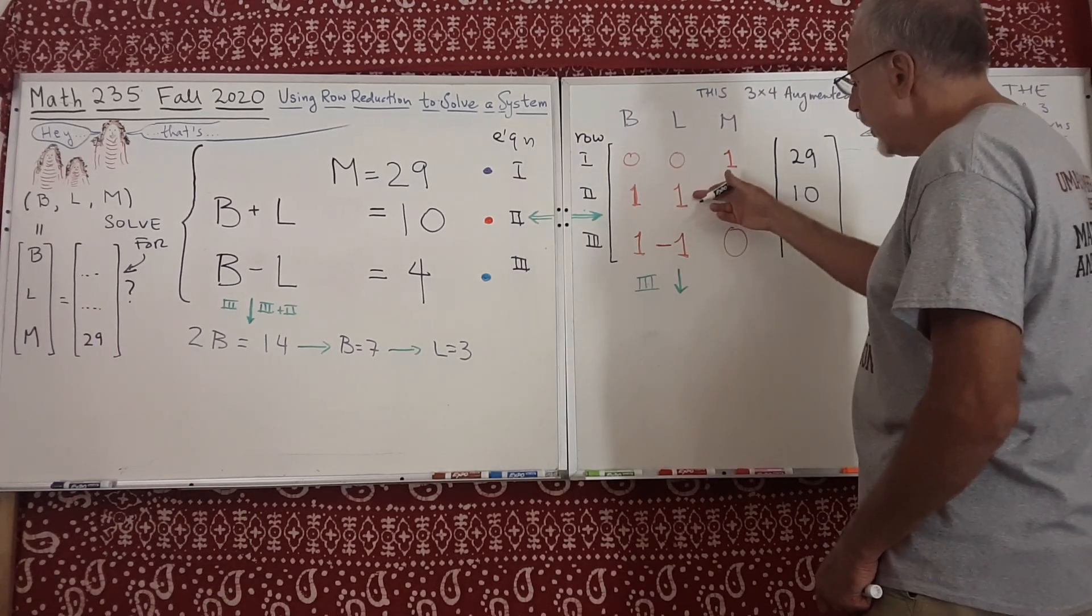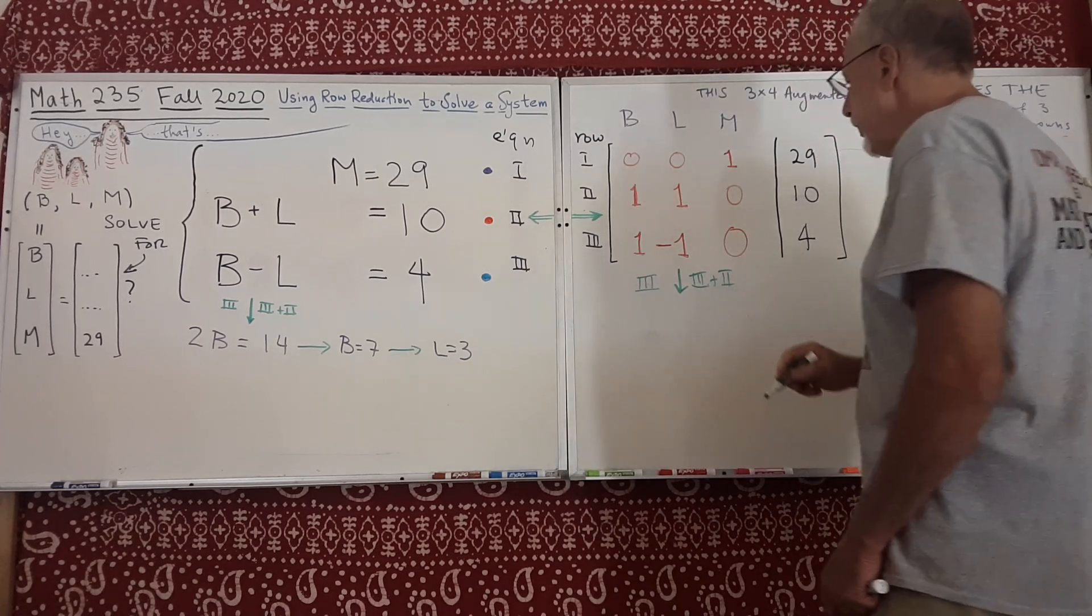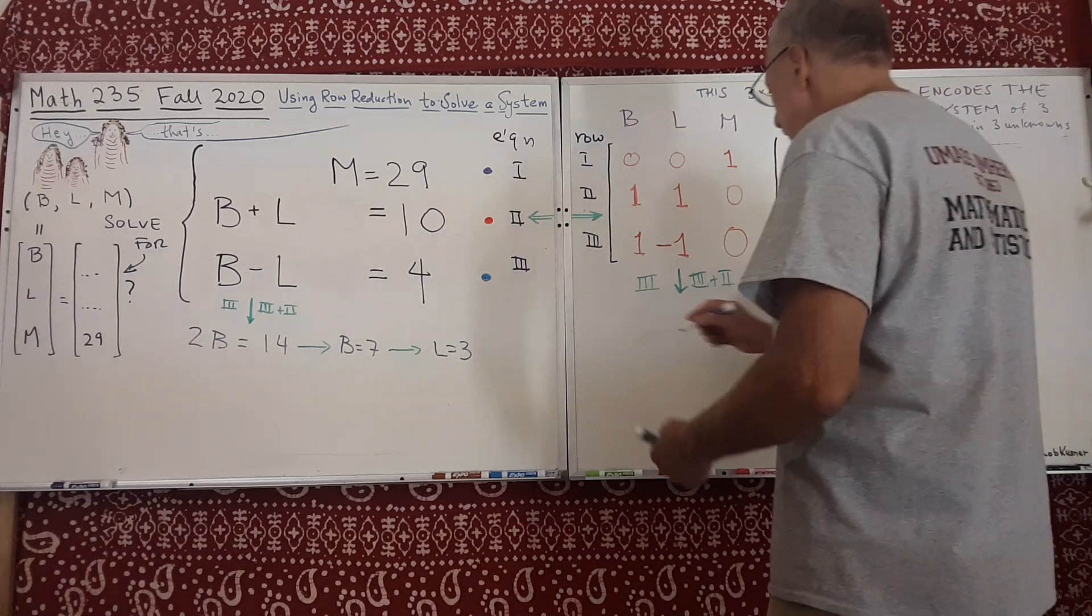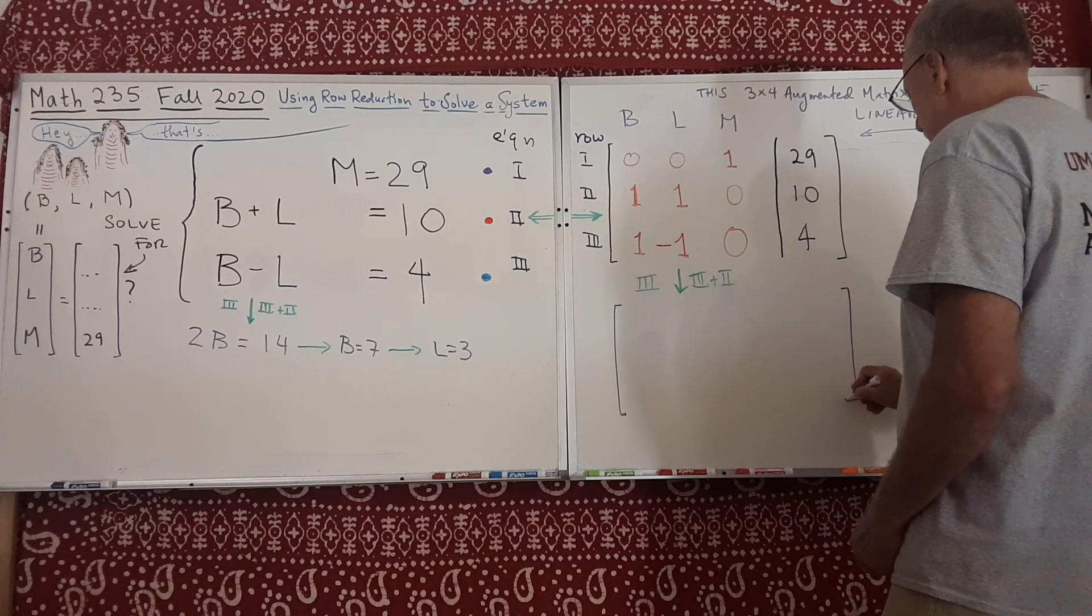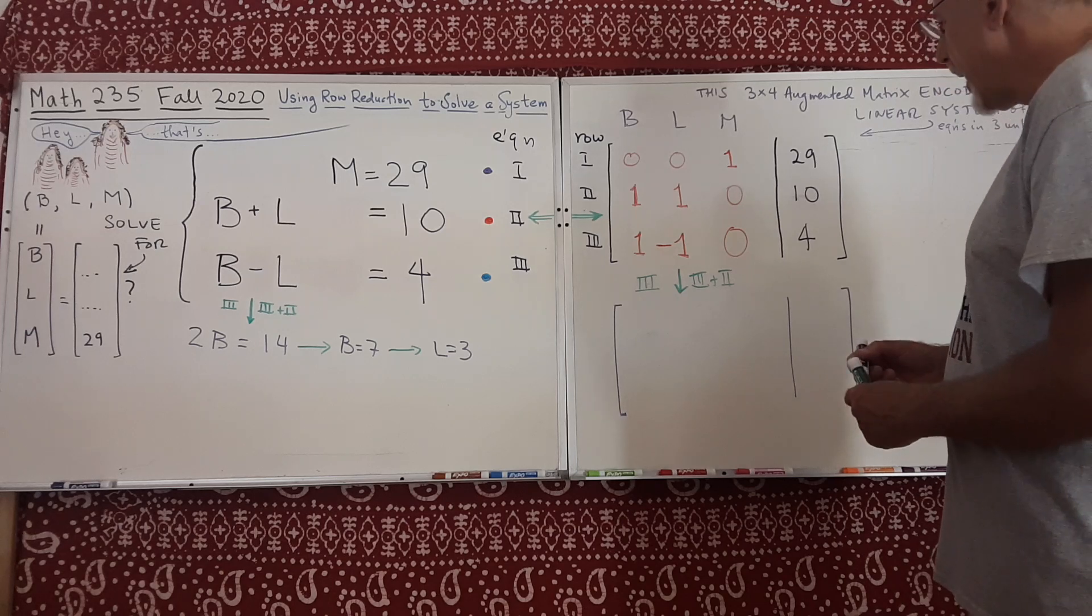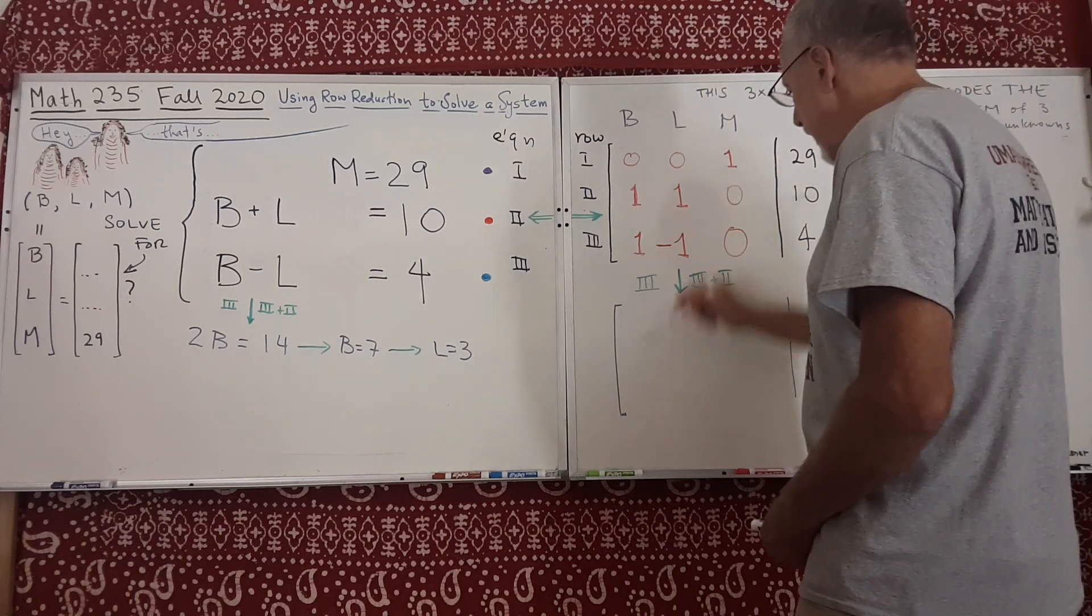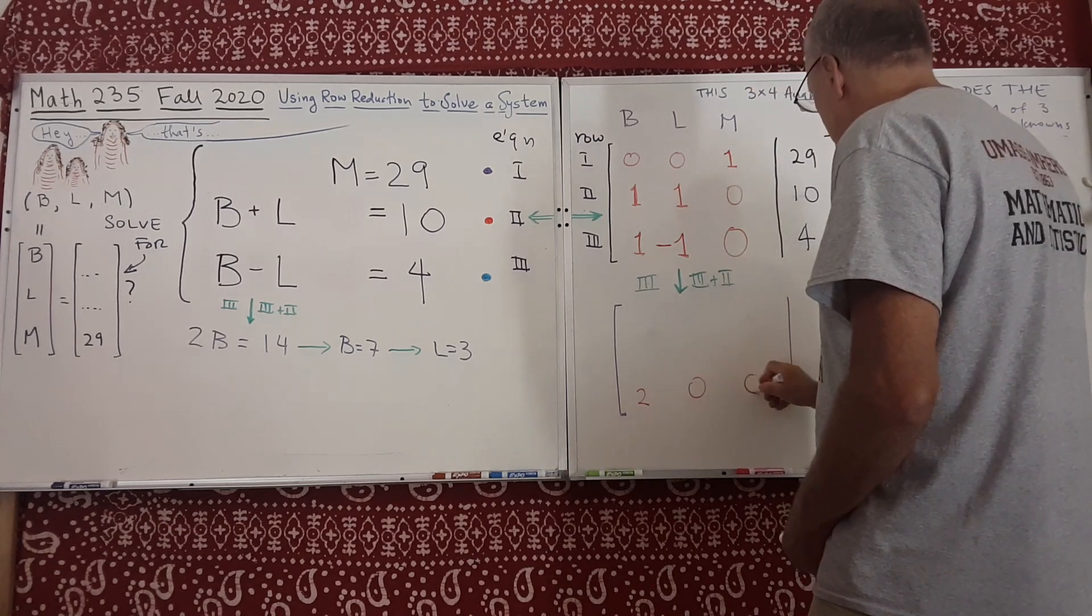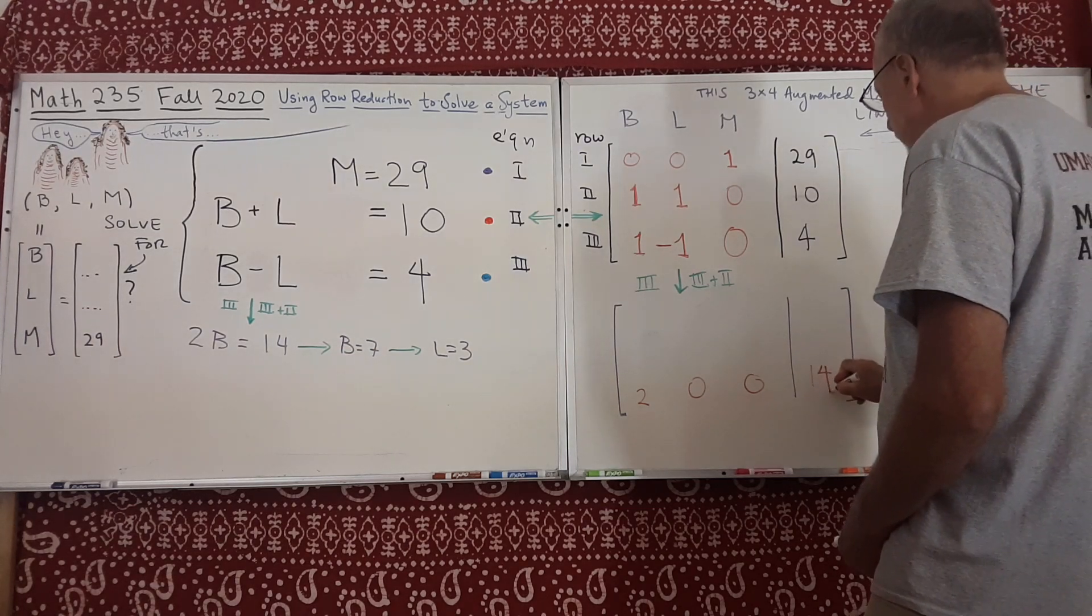We're going to get a new augmented matrix. Maybe I'll just indicate what happens with the third row at the moment. If I do that, then the third row becomes what? Well, if I add the rows, this row to this row, this becomes 2, this becomes 0, and this becomes 0, and this becomes 14. I'm adding 10 to 4, so that's 14.